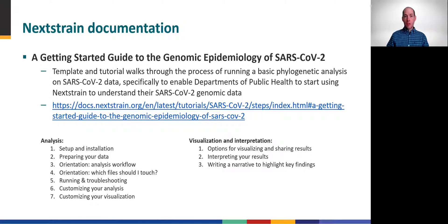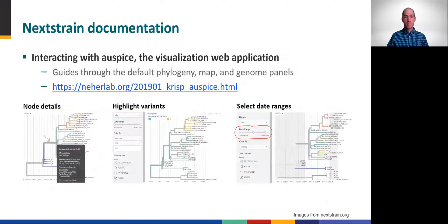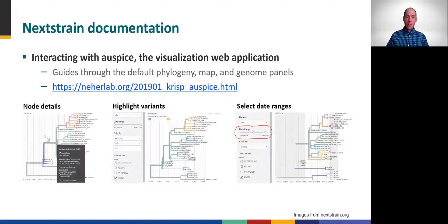The link to the tutorial is provided here and on the COVID-19 Genomic Epidemiology Toolkit webpage. Similarly, the Nextstrain website also includes a detailed guide to interacting with your data in the browser via Auspice, including things like revealing node details, highlighting key sequence variants of interest, and specifying date ranges within your dataset. The link to the guide is listed here as well as on the toolkit website.